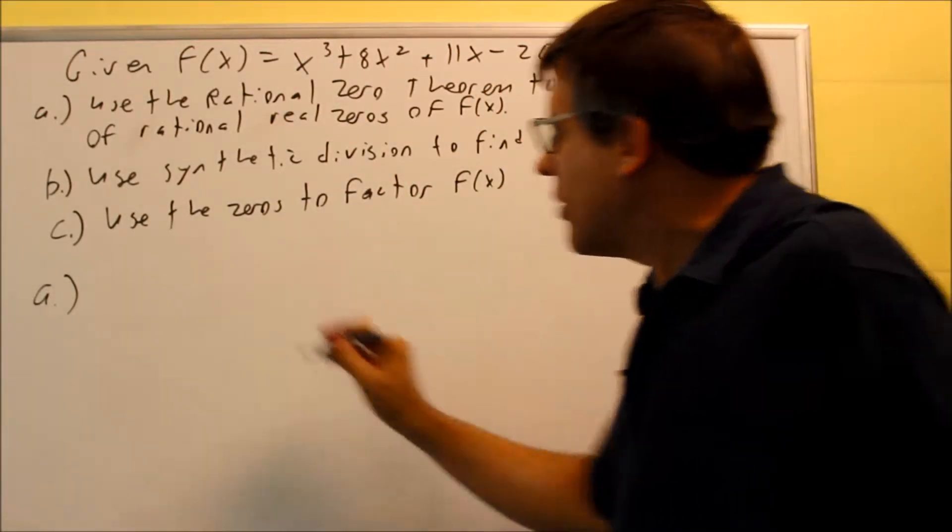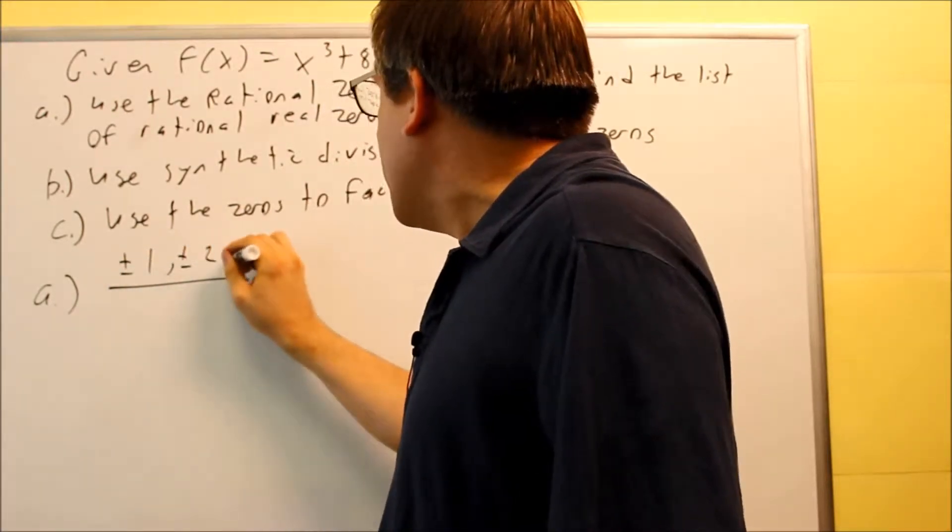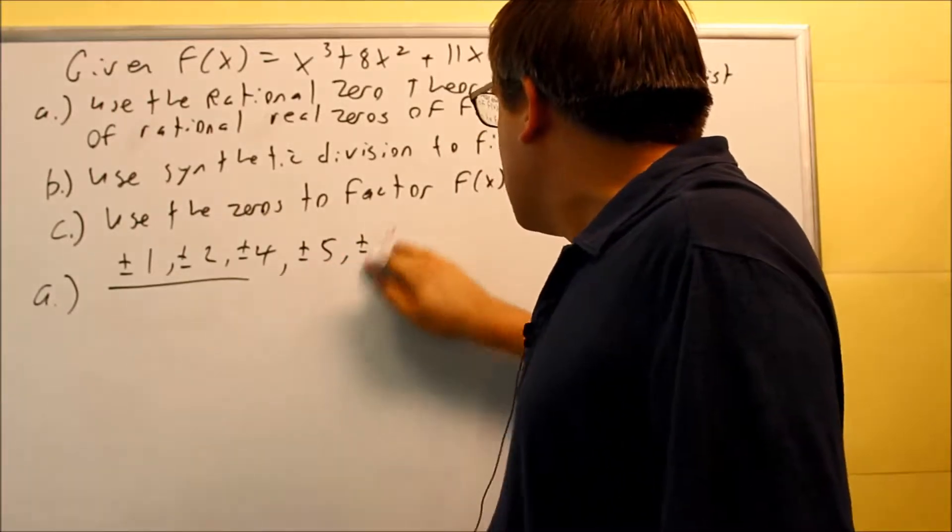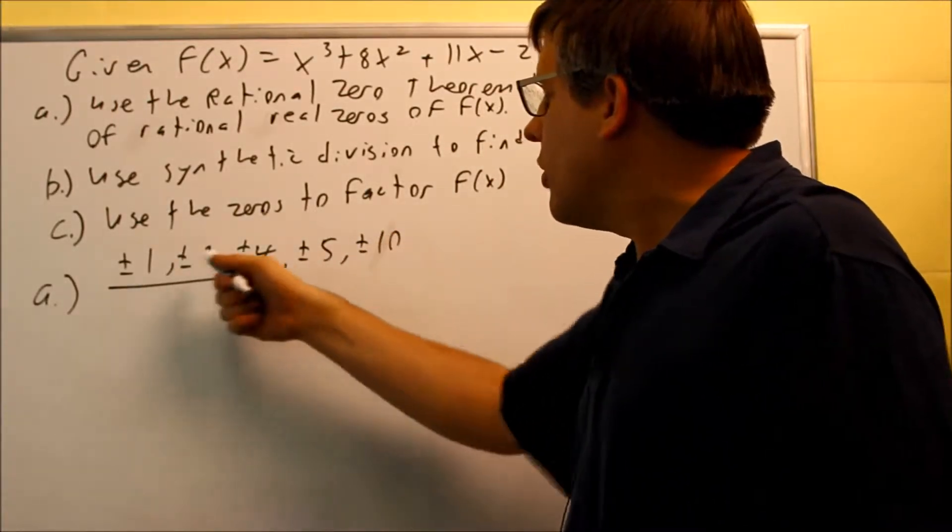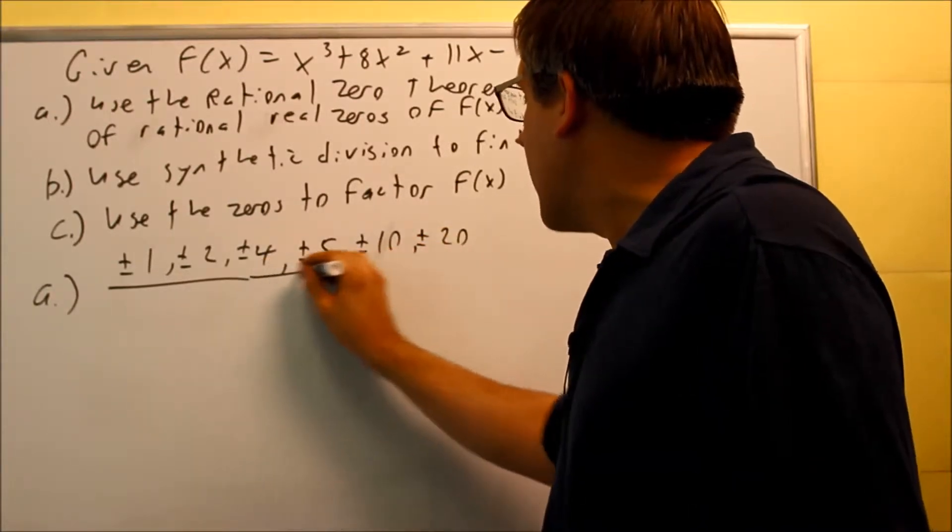The factors of the last number, factors of 20, would be all numbers that divide evenly into 20. So here's all the factors of 20. We have 1, 2, 4, 5, 10, and 20. Those are all the factors of 20.